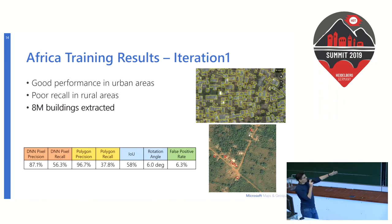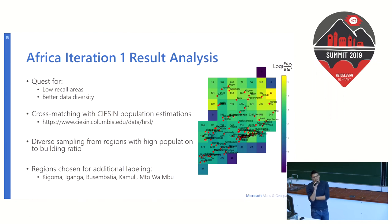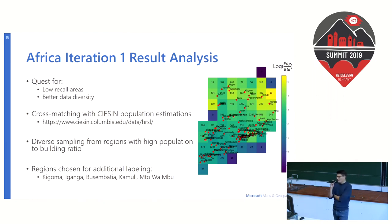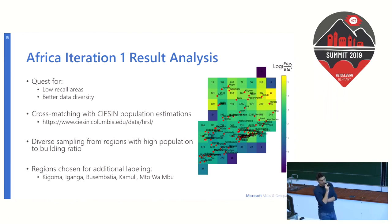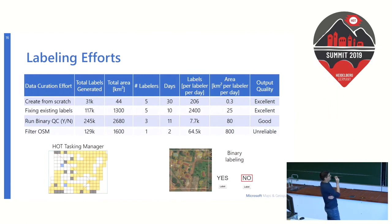Once we trained the model on that data, we got great performance in urban areas but very poor performance in rural areas, extracting 8 million buildings. To deal with the lack of diverse data, we cross-matched our predictions with open population estimation sources, and from regions where the population-to-building ratio was high, we selected regions for labeling. We also ensured the regions were diverse in terms of landscape and imagery type. Five regions were selected and provided to HOT partners for labeling.